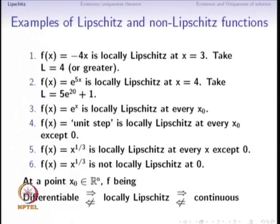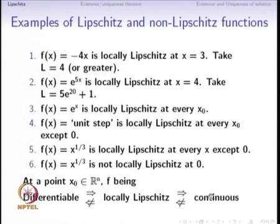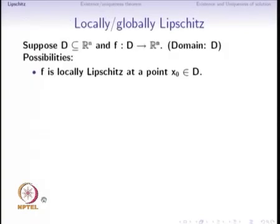We can conclude that at a particular point x0 in R^n, if f is differentiable, then it is indeed locally Lipschitz at that point. If it is locally Lipschitz at a point x0, it implies that it is continuous at x0. Conversely, if f is continuous at x0, it does not imply that it is locally Lipschitz at x0. And if f is locally Lipschitz at x0, it does not mean that it is differentiable at x0.